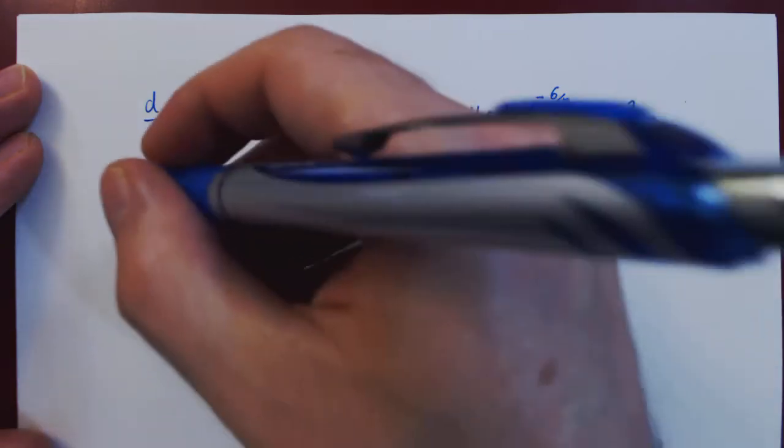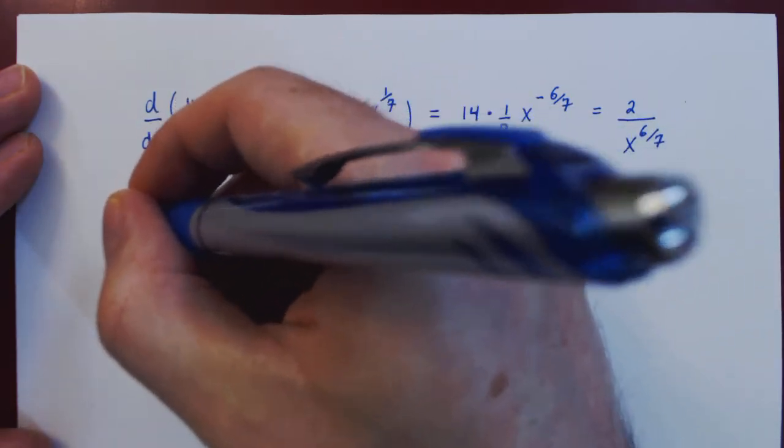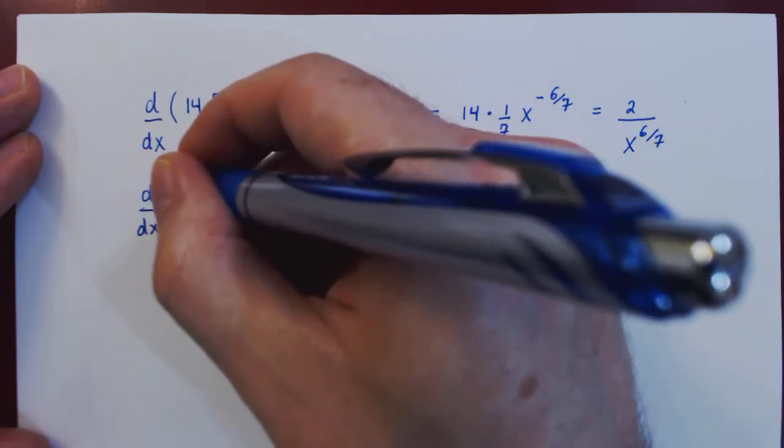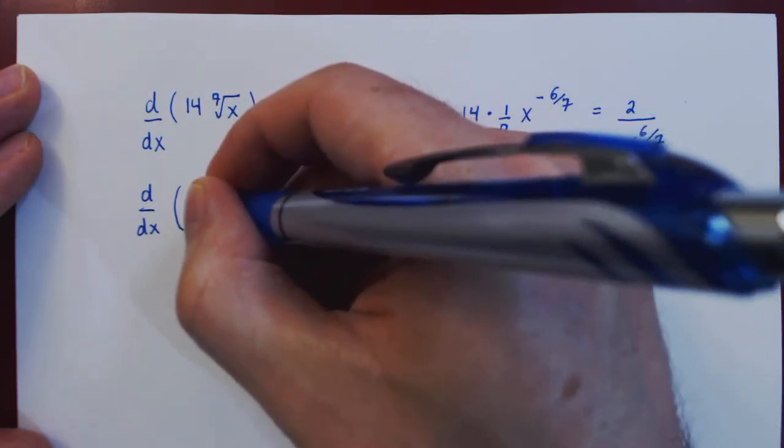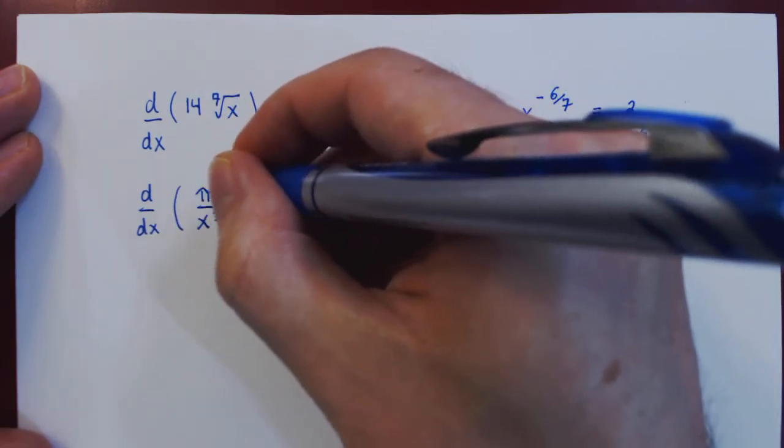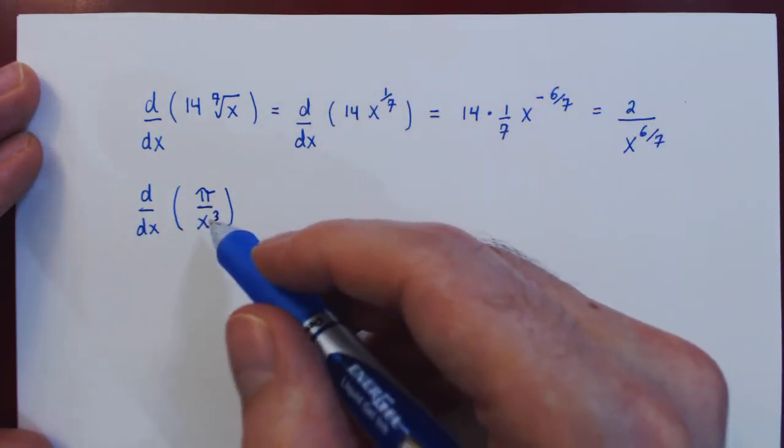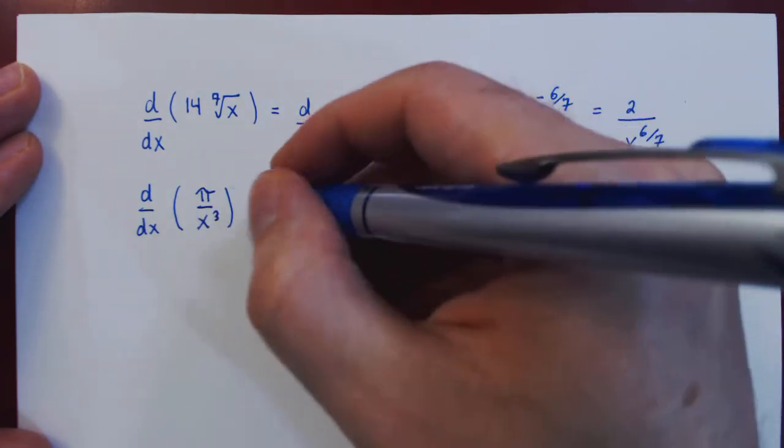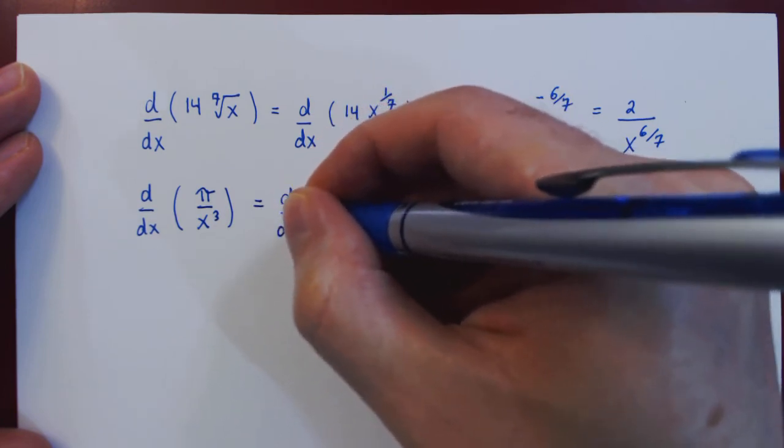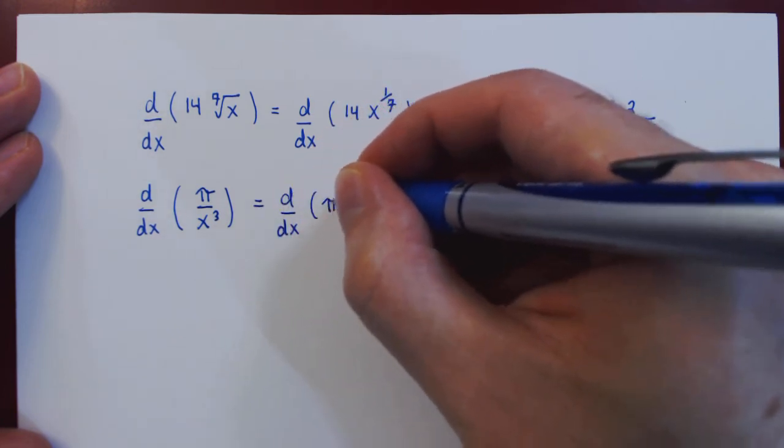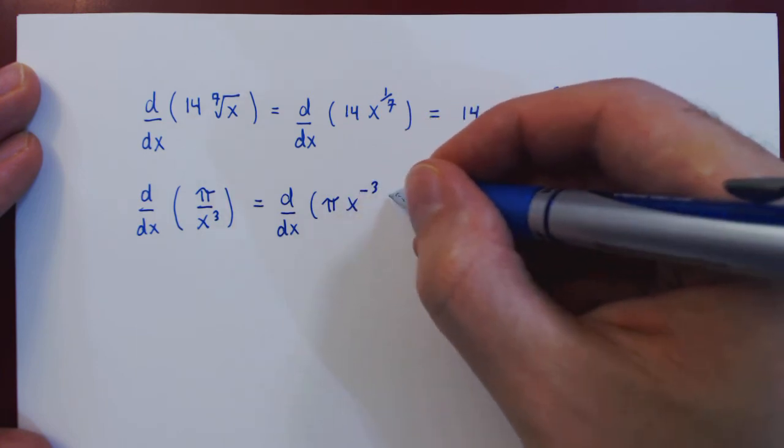Let's do one other example. What if we wanted to take the derivative, again with respect to x, of the function pi over x cubed? Well, once again, before we differentiate, we will rewrite the expression. In this case, we will bring x up, so x to the negative 3.